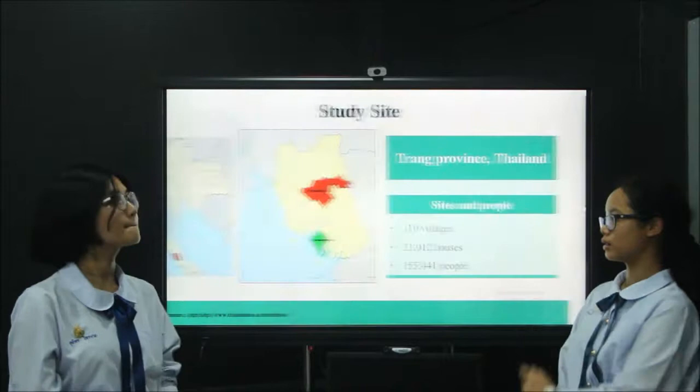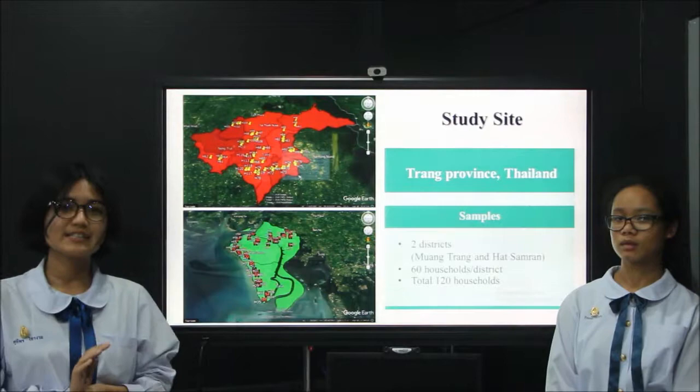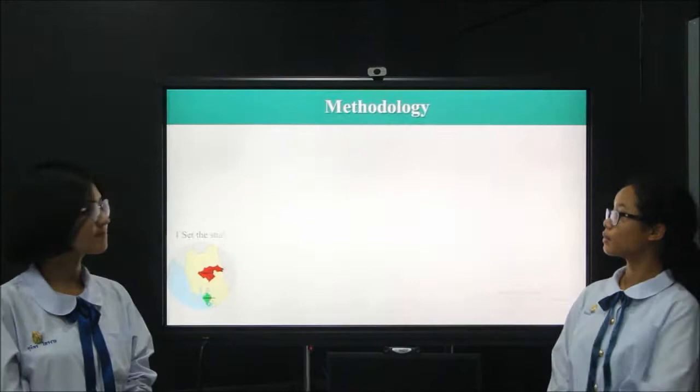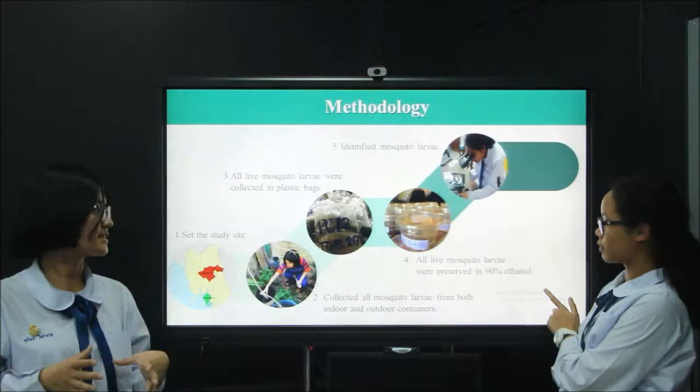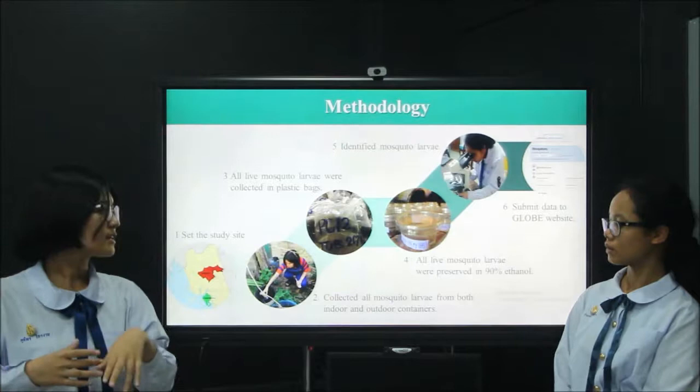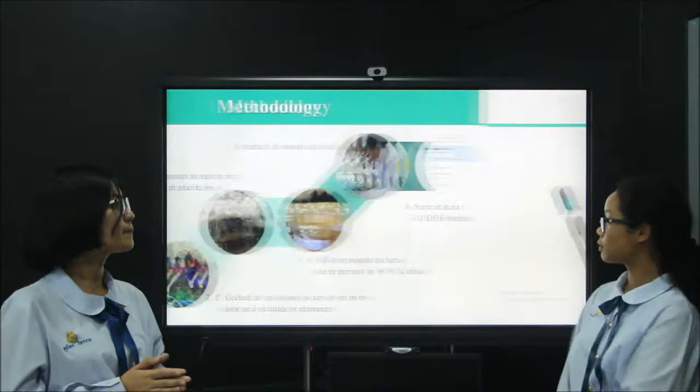Our study site was conducted in Mueang District, and we chose two sub-districts: Mueang and Ha Senran. We collected data from 60 households per sub-district, totaling about 120 households. We set the study sites, then went to each site and collected all mosquito larvae from containers both inside and outside the house, collected them in plastic bags, and preserved them in 90% ethanol. After that, we identified the mosquito larvae under the microscope, and finally submitted the data on the GLOBE website.